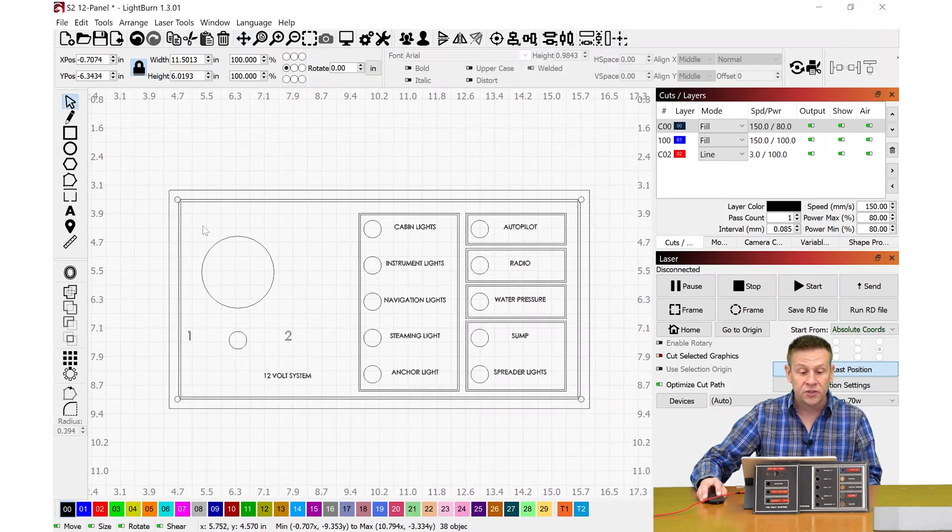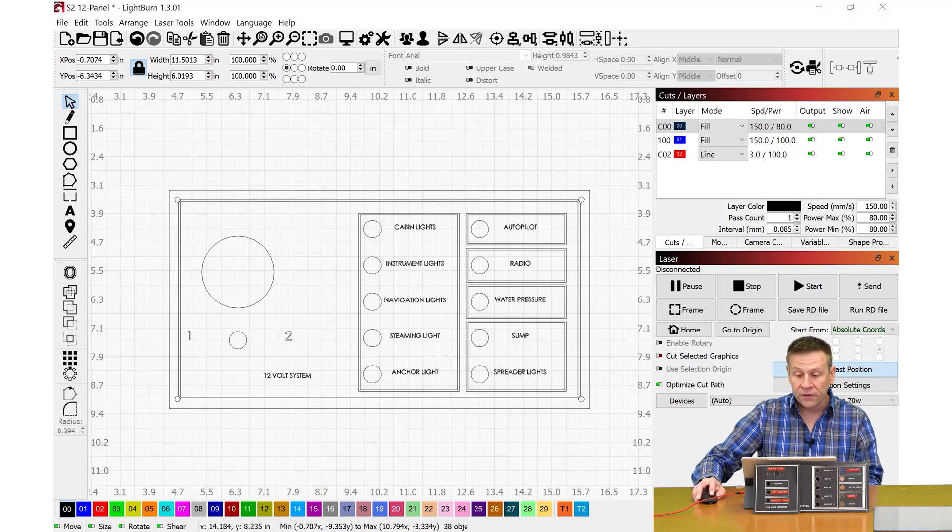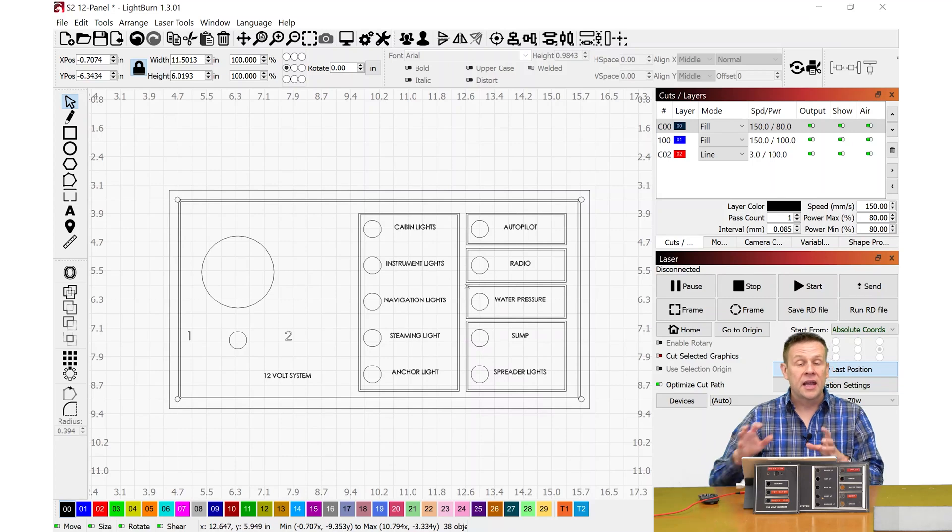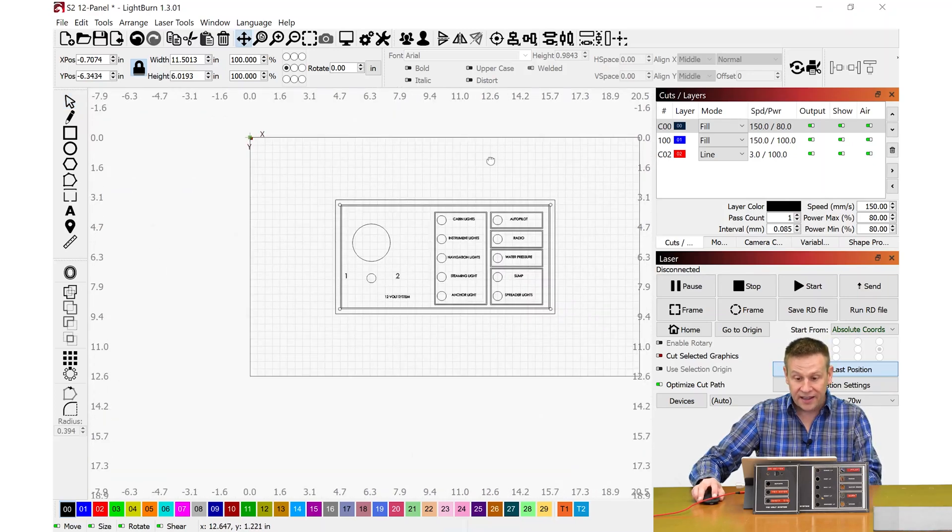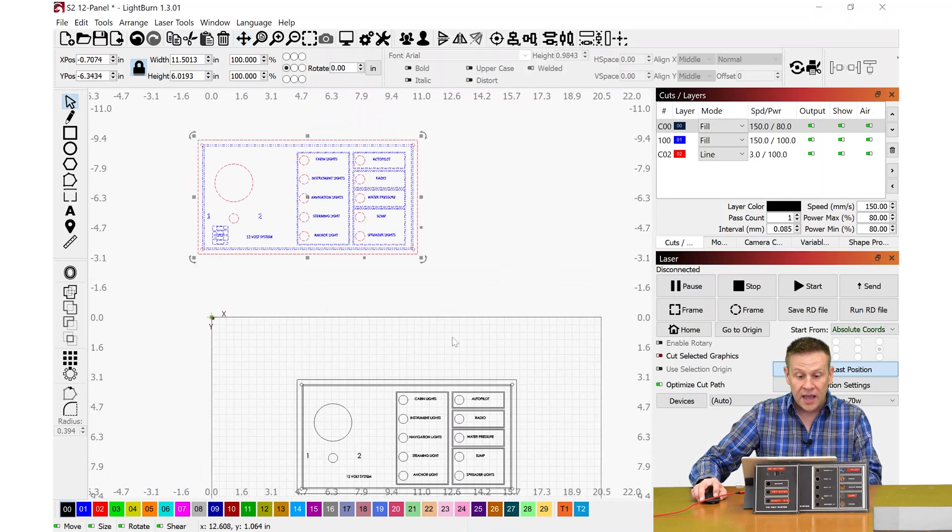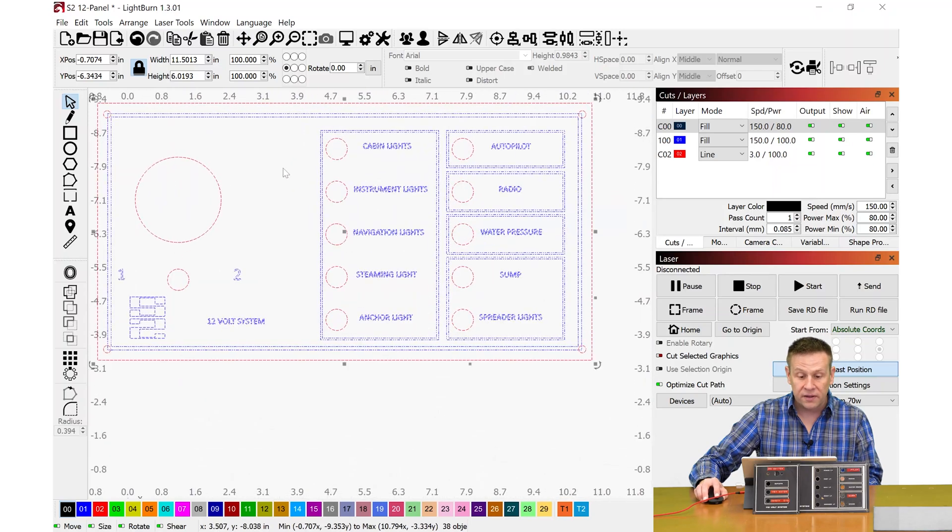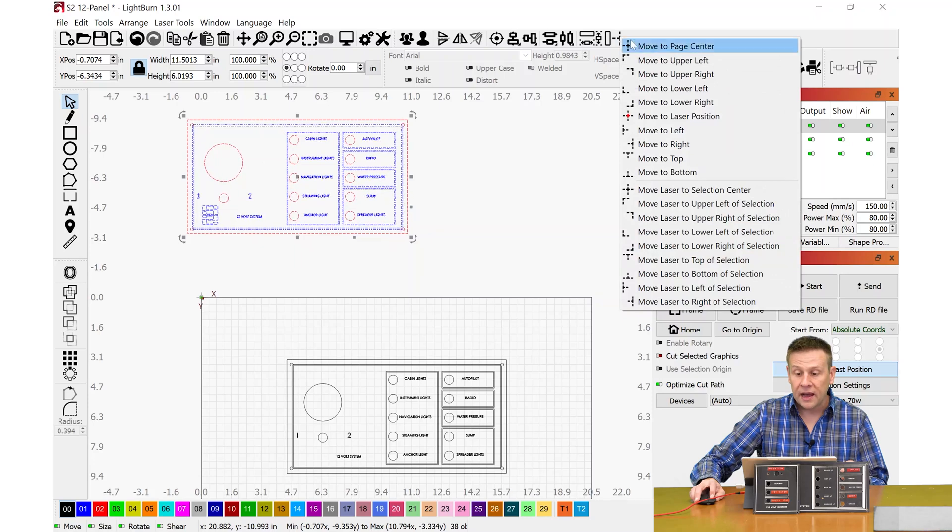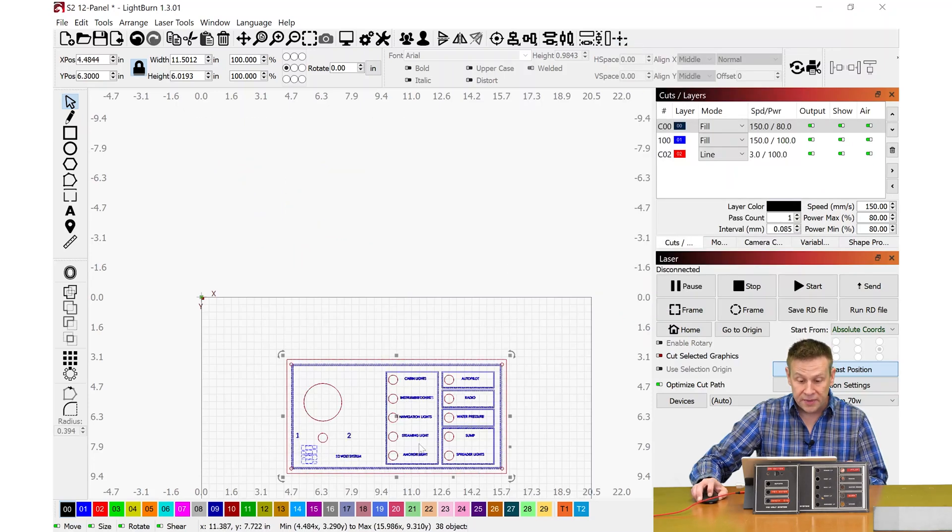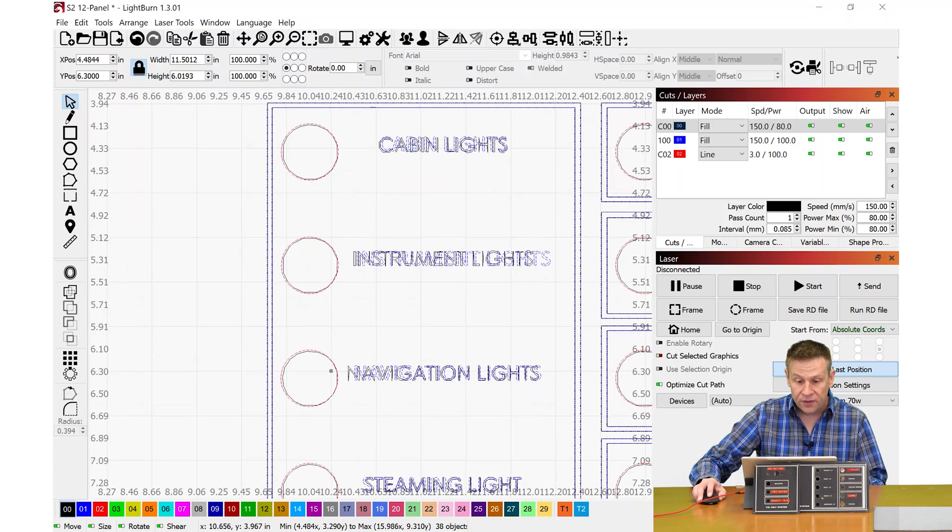So to get around this, the quickest, easiest thing that I could think to do is just to redraw within LightBurn over the top of the text and all of these features. And because I'm drawing these new objects within LightBurn software, I now have the option to either engrave them or cut them out. I'm not going to take you through step by step on that. Instead, I'm going to pan the screen up and we'll see that I've already done that.